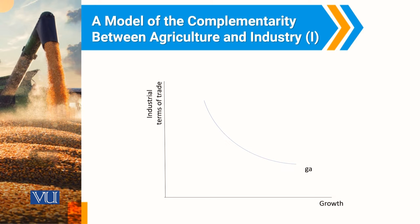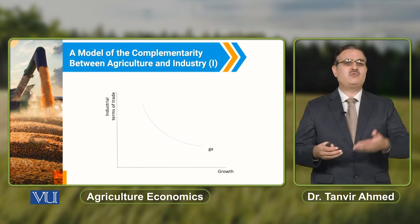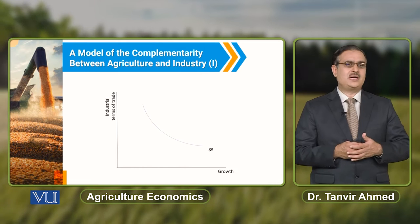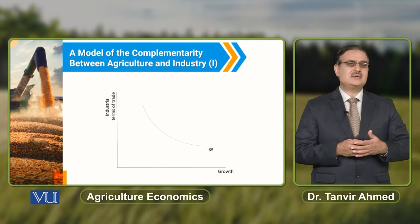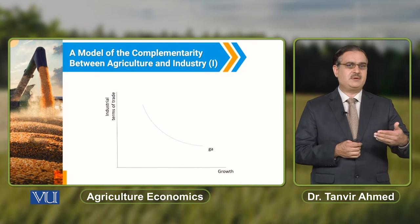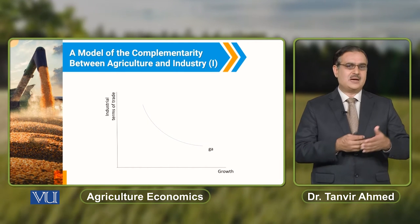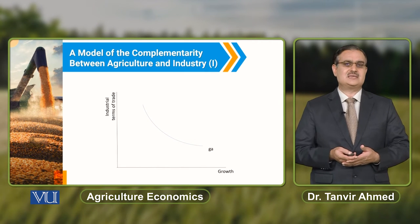Industrial terms of trade is the price of industrial goods relative to food. If we compute the price of industrial goods to food and it is high, then industrial terms of trade are better. If it is low, then industrial terms of trade are relatively low — high when prices of industrial goods are high, and low when prices of industrial goods are low. When prices of food are constantly high, there is less growth in the agricultural sector. At low industrial terms of trade, there is high growth in the agricultural sector.